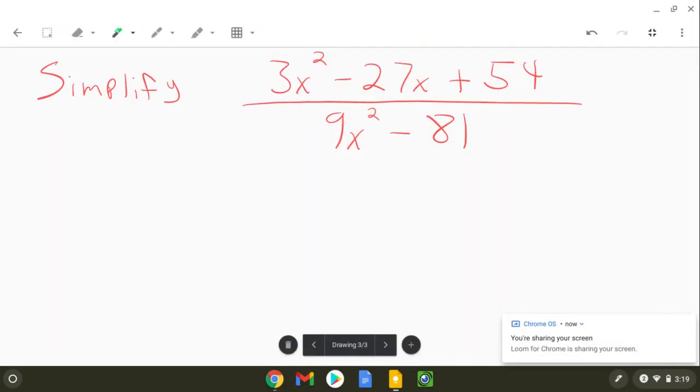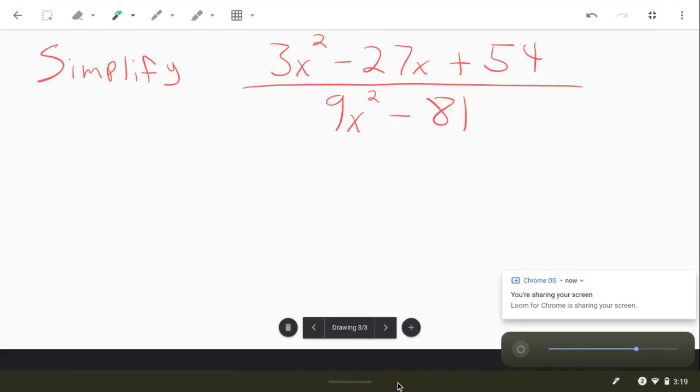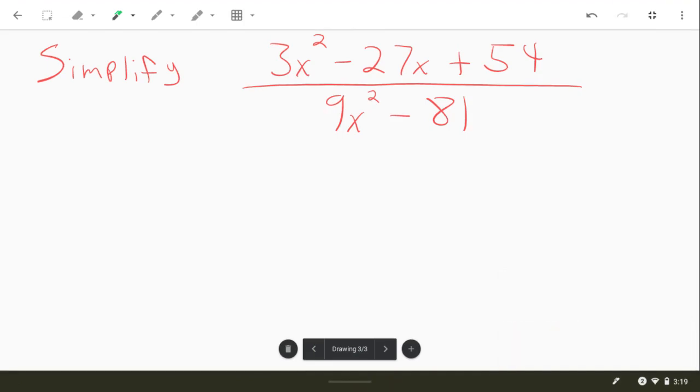We're going to simplify this expression, just like we would simplify 27 over 60. Find a common factor that goes into both of them and then divide it out. That's what we're going to do here.